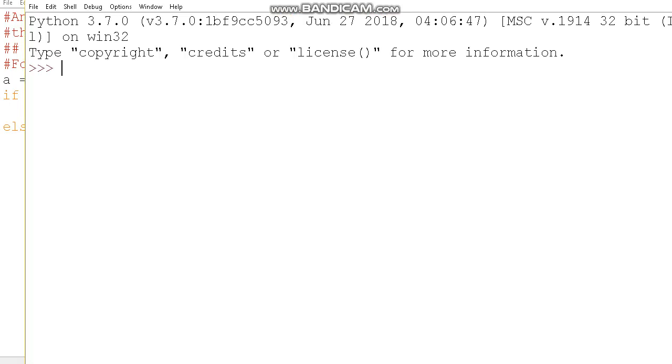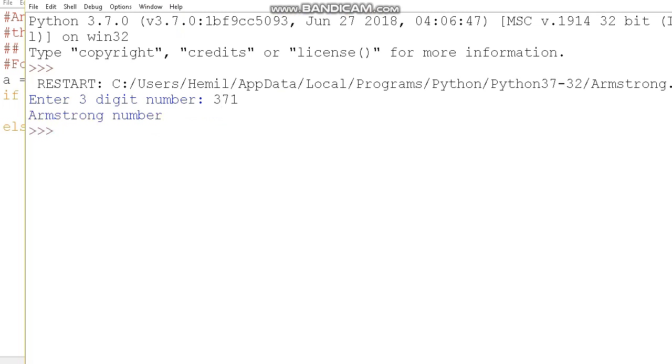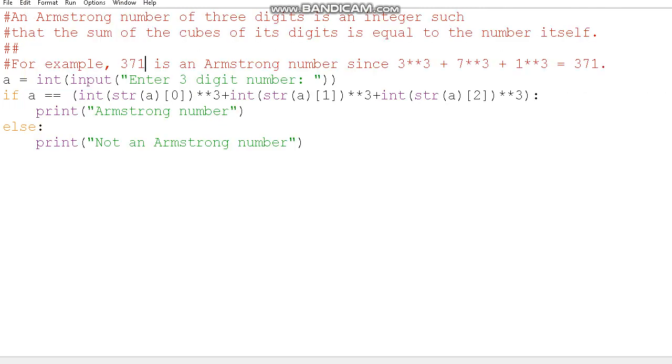Now let's try an Armstrong number, 371. Let's run this, 371. As you can see it works, it says Armstrong number. So what we've really done here is we've literally split up each component using str(a) and then pick the first character, second character and third character, and then we've reconverted it back into integers using int.